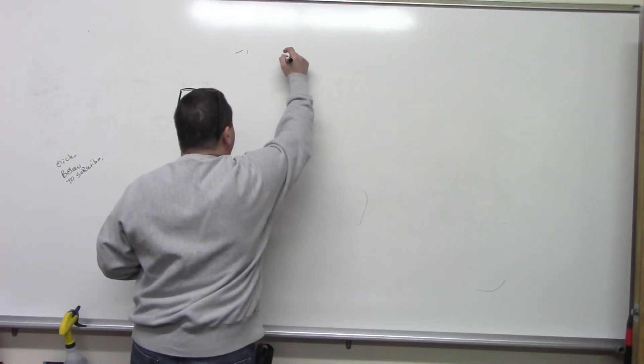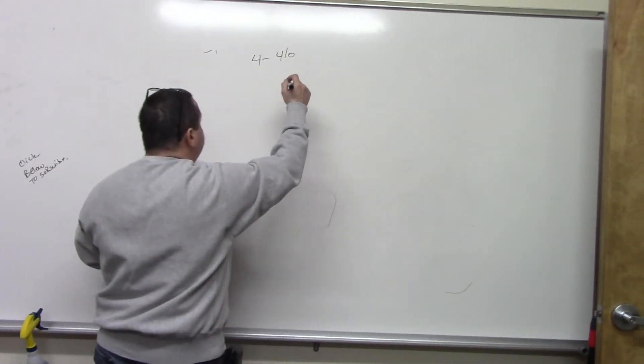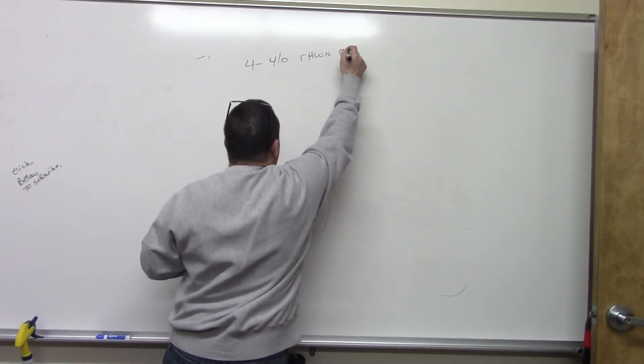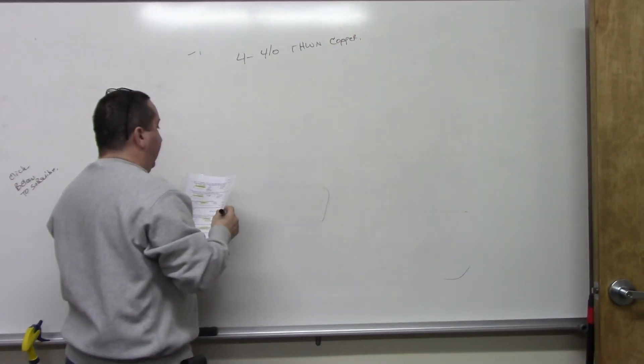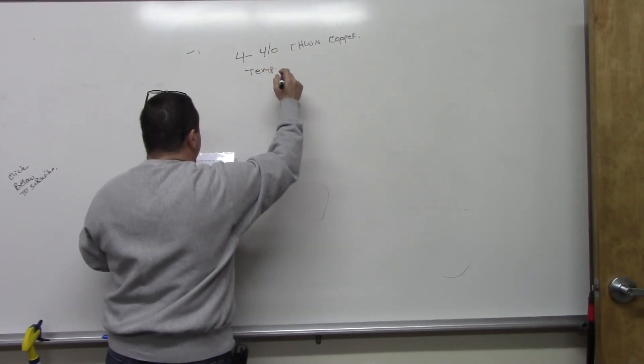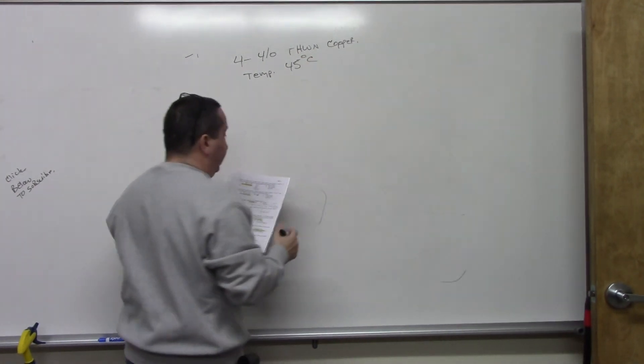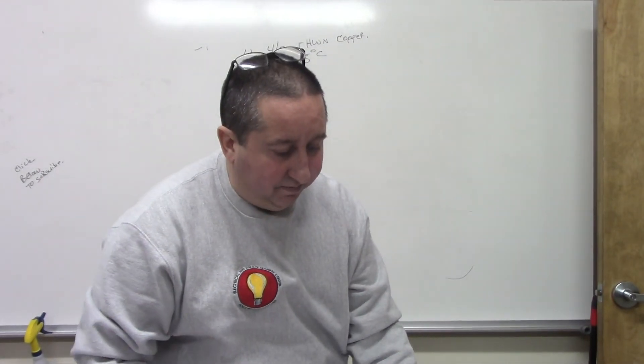In this problem, we have four 4 AWG conductors, THWN, which is copper, and we have a temperature of 45 degrees Celsius. So that's what's given. How do we actually do this problem?